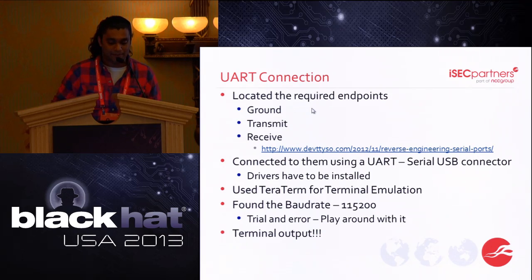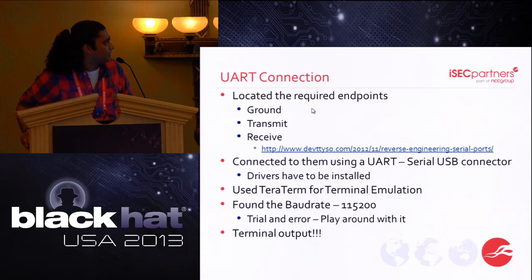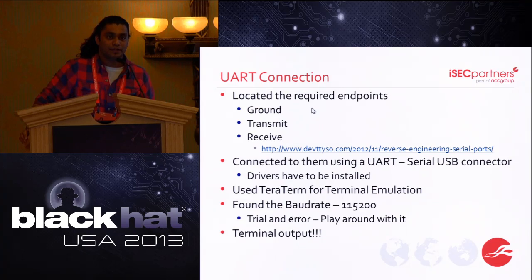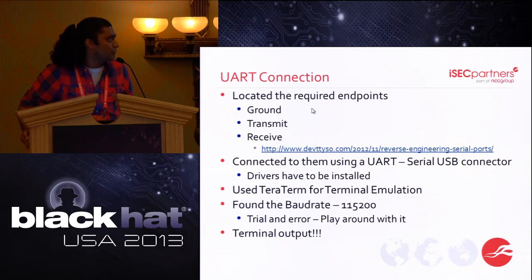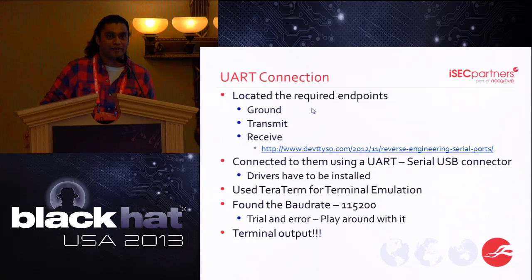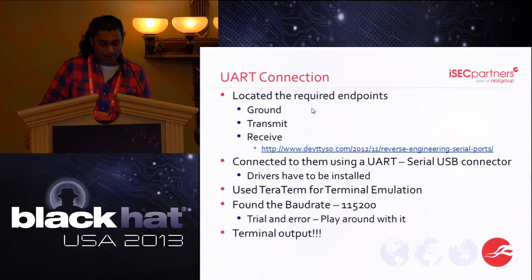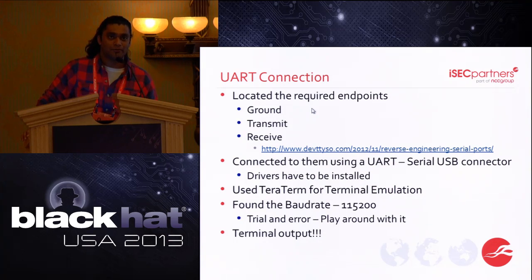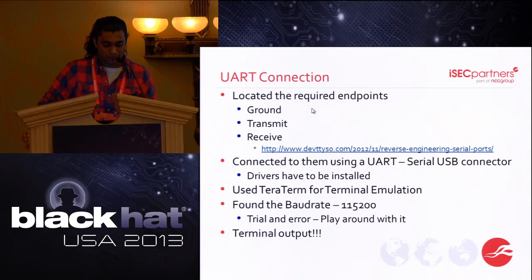So this is terminal output. To recap: you need to find three pins — ground, transmit, receive. There's a nice article that shows exactly how to do that. Once you've located the three pins, connect them to a laptop using a UART-to-USB connector, make sure you have the drivers installed, and use a terminal emulator like TeraTerm or xterm. You also need to find the baud rate for the device. In Twine's case it was 115200. There's no easy way to find the baud rate — it's trial and error through a finite number of rates. You can write or find a script to cycle through them. Once you have all this, you get terminal output.